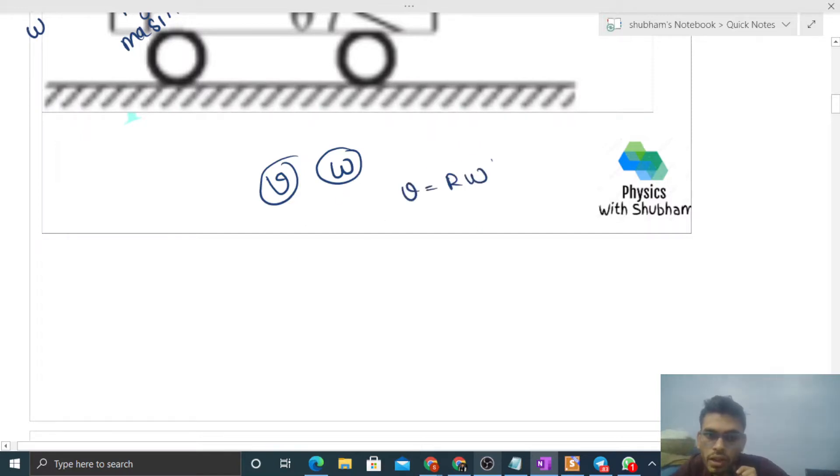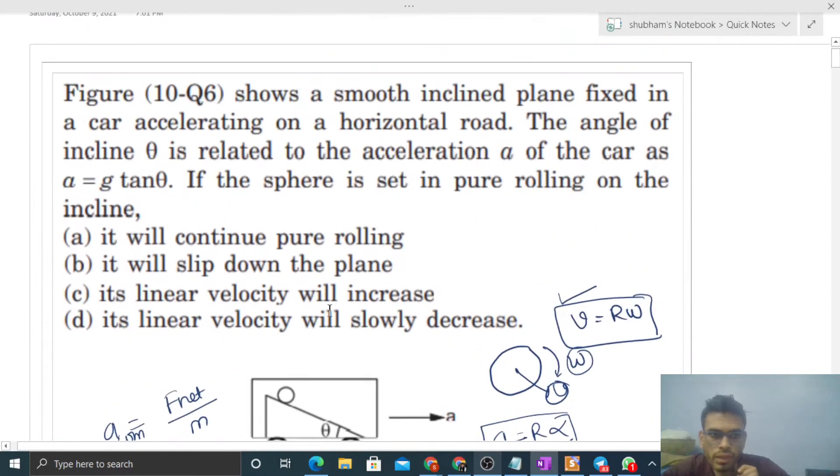And this body will keep rolling because v and omega never change, so v equals r omega is always satisfied. So we can say this body will move with the velocity v you gave initially and rotate with omega, and pure rolling occurs.